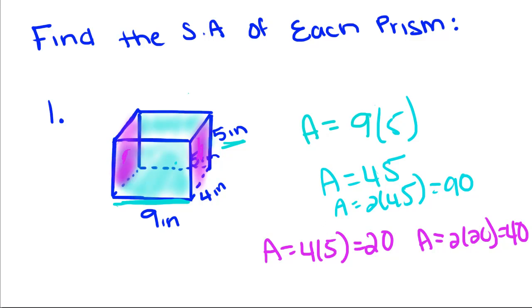So now we have one more thing to find the area of, which is this top right here and this bottom right here. So we're going to do the same thing. We're going to take, except this time it's going to be 9, because that's this side of the box, times 4, which is the width of the box. So A is equal to 36, and we're going to multiply it by 2 to get the bottom and the top.